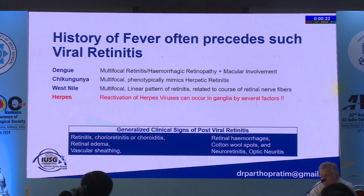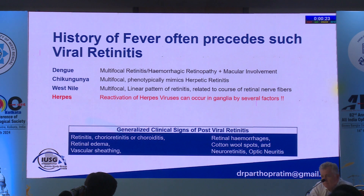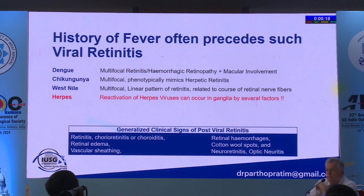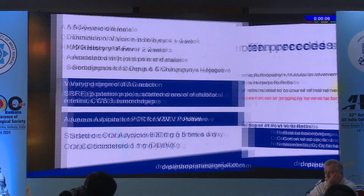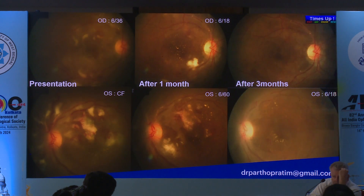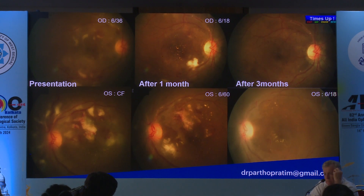After fever, reactivation of herpes viruses can also occur. The single most important factor causing herpes reactivation in the ganglion is a rise in cyclic AMP levels, which can be triggered by fever or emotional stress. A case that looked like chikungunya retinitis — with a history of fever — was ultimately shown by PCR to be varicella zoster virus, and it dramatically responded to oral steroids and acyclovir.